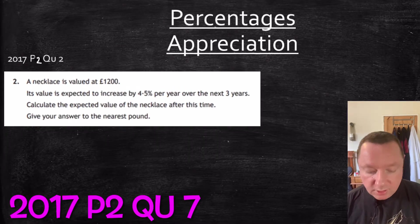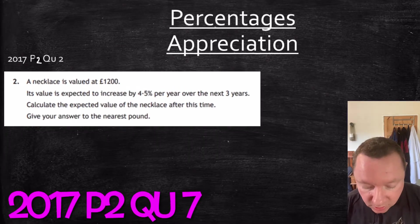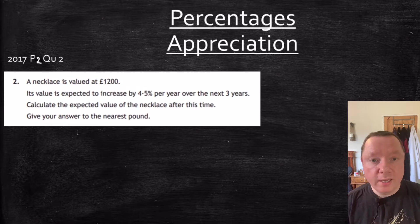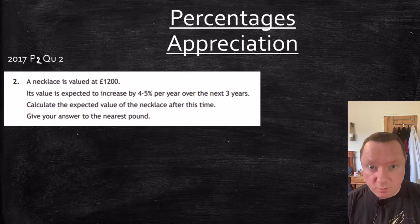Okay, now Question 2017, Paper 2, Question 2 says, a necklace is valued at £1,200. It is expected to increase by 4.5% per year over the next three years. Calculate its expected value after this time. Give your answers to the nearest pound. Be careful. So let's start the same way. Our multiplier.